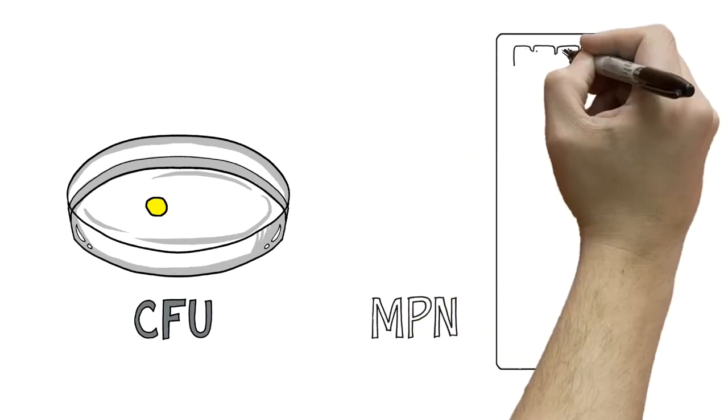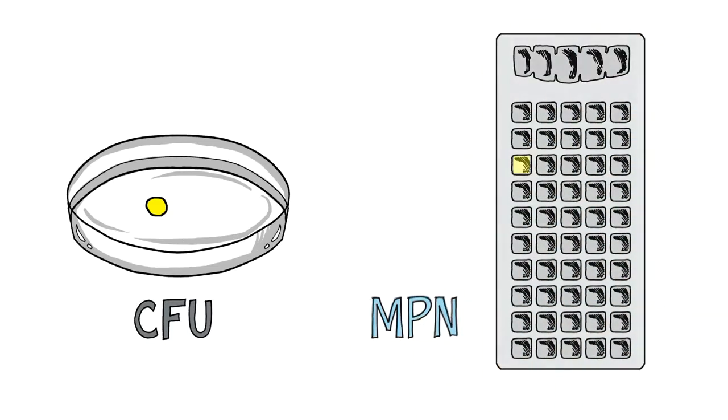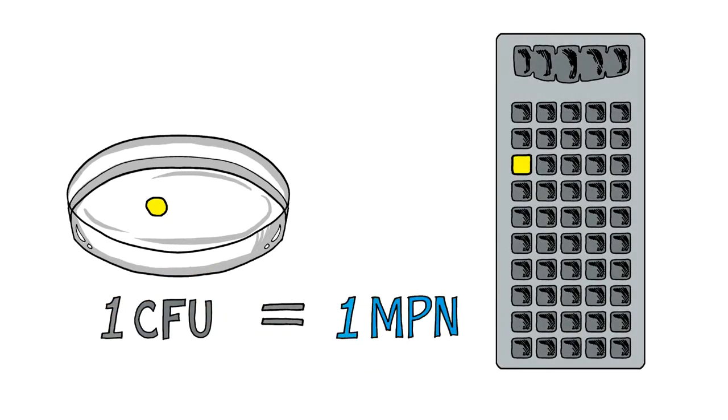For an MPN measurement, samples grown in a liquid medium are separated into wells. Positive wells are then counted, and an MPN conversion table is used to generate a numeric result.